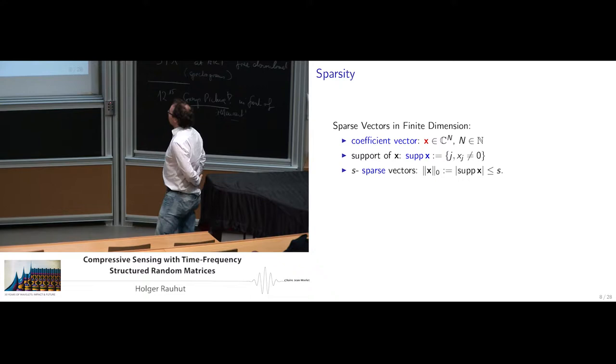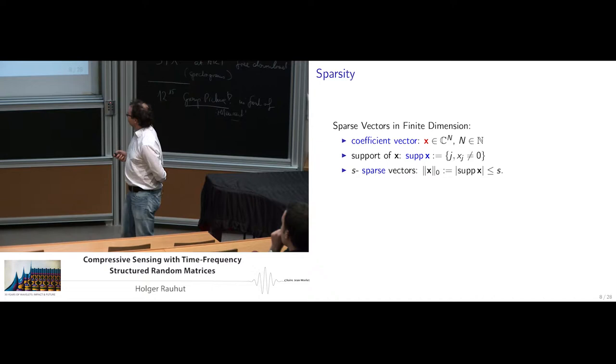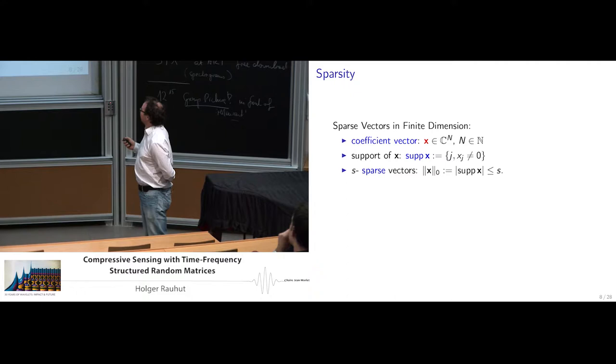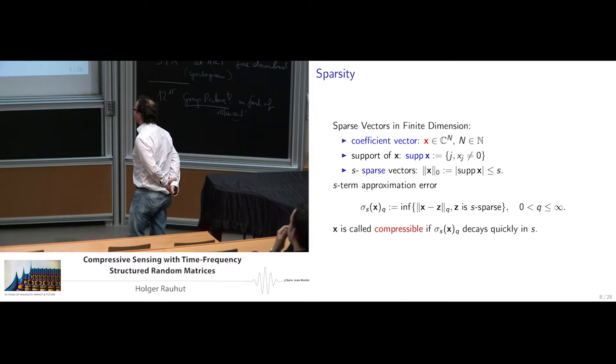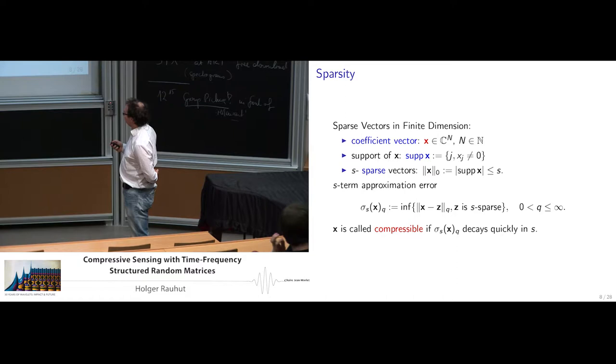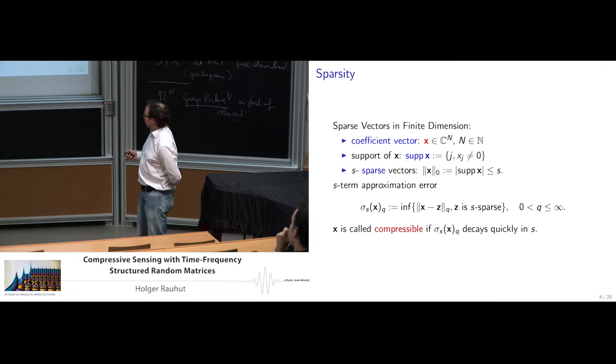Let me go to mathematics. We speak about sparse vectors in finite dimensions. These are vectors where only S coefficients out of N are actually non-zero. N you should imagine very large and S significantly smaller. Often in practice you do not have exact sparsity, but at least you can approximate well. We introduce the error of best S-term approximation, which is the error you make by replacing your vector with a sparse vector in the best way. We call X compressible if this quantity is small or decays quickly in S.